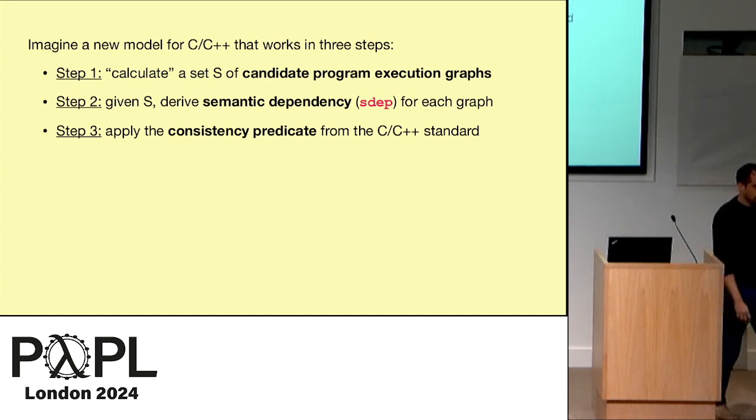So I think there is a recent proposal for C and C++ standard, a fix for the thin air problem that if I understand correctly is more or less this idea. We will have a new model that will have three steps. Maybe I'm wrong, but think about this as a possible idea. Step one, we're going to calculate all the candidate execution graphs, ignoring consistency completely. Then given this big set, derive a semantic dependency relation, this SDEP, for each of these graphs. And then we apply the consistency predicate from C or C++. This is the idea.